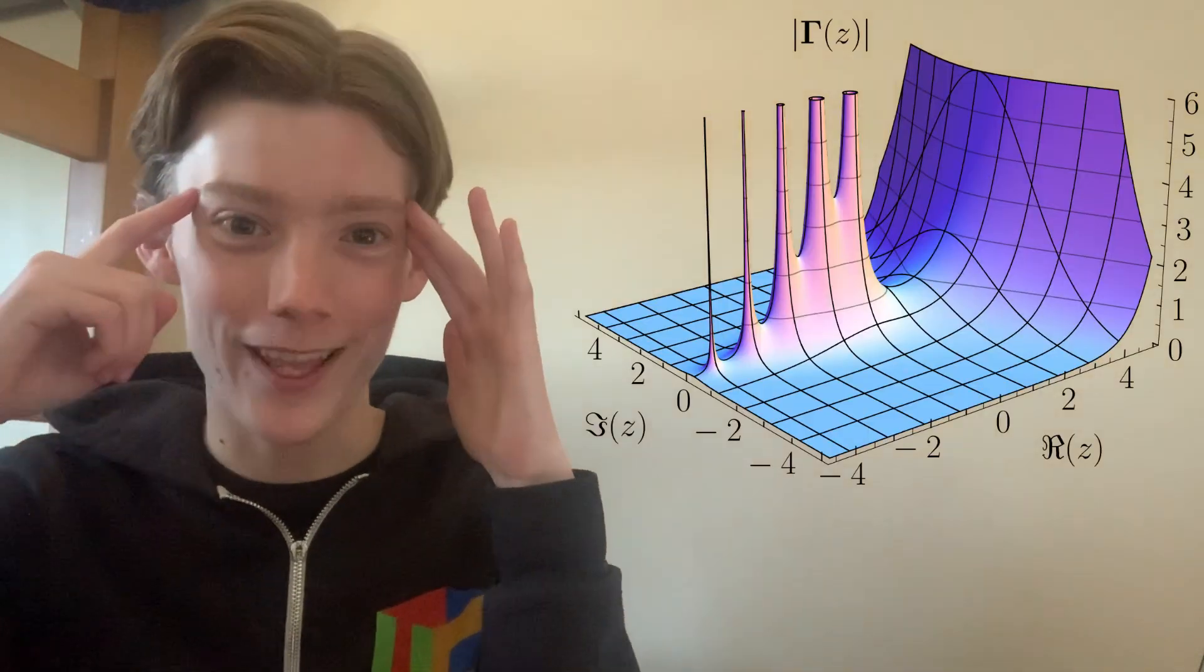And then I scrolled further down the page and saw that the gamma function actually generalizes not just positive and negative numbers to the factorial function, but also complex numbers.